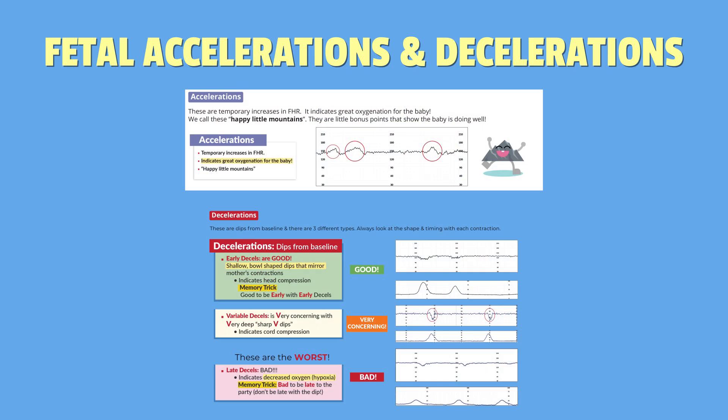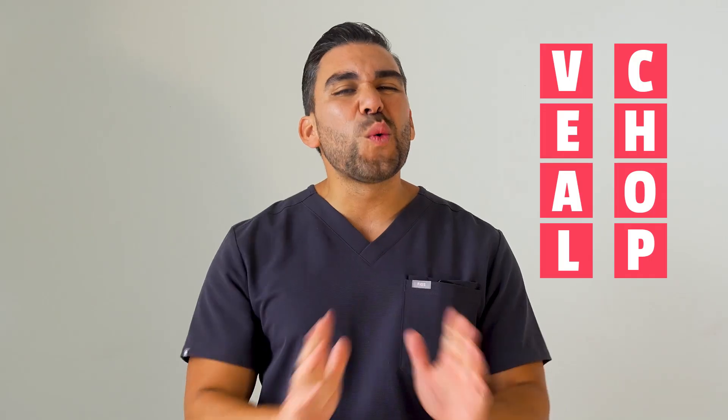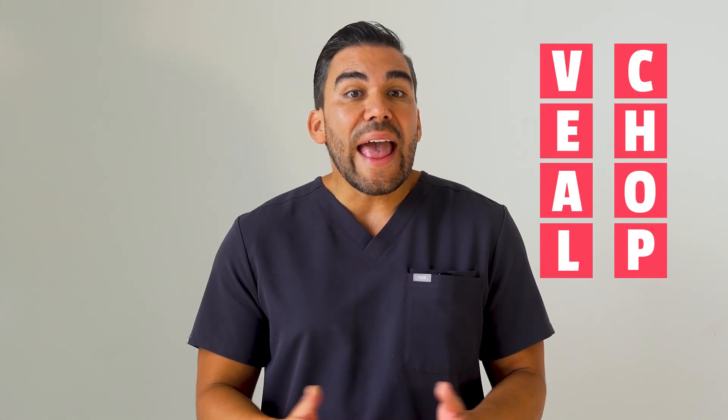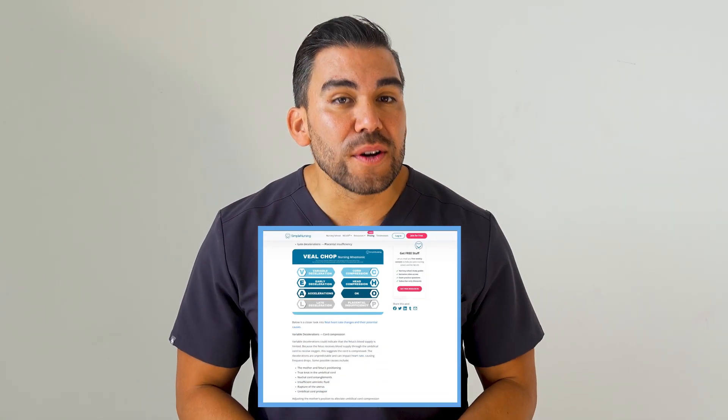Understanding these patterns is crucial for providing safe care during labor and delivery. The VEAL CHOP mnemonic gives you a quick way to recall different heart rate changes and their potential causes, allowing you to act swiftly when needed. Fetal heart rate monitoring made simple — keep practicing and you'll be able to interpret fetal heart rate patterns like a pro. Make sure to check out the blog for a condensed overview of this topic. Remember, this skill can help you save lives in the delivery room, so don't be scared — be prepared.